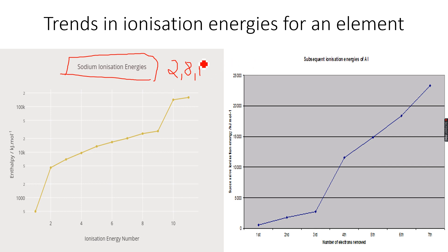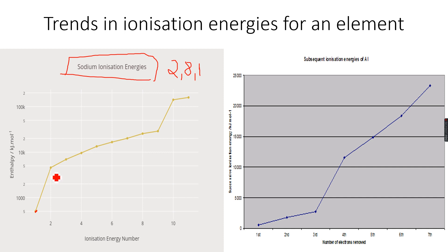First, we will remove this one electron. This is the amount of energy needed to remove that one electron. You can see that we start from here, remove the first electron, and then there is a large increase in ionization energy. When you see a steep increase in ionization energy, it indicates there is a change in shell.